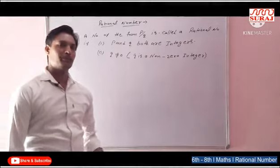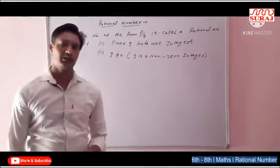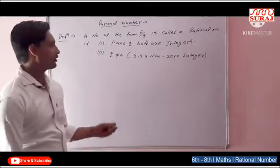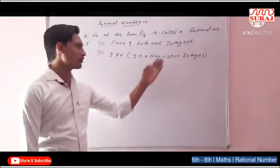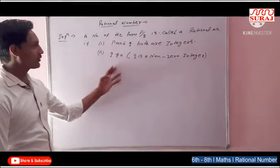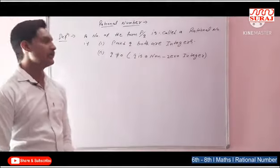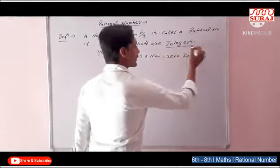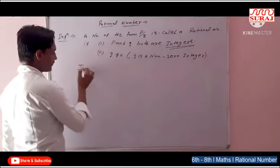Second condition: Q not equal to 0, it means Q is a non-zero integer. Definition hamari rational number ki — a number of the form P by Q is called a rational number, where P and Q dono numbers honge, dono integers honge, and Q not equal to 0.